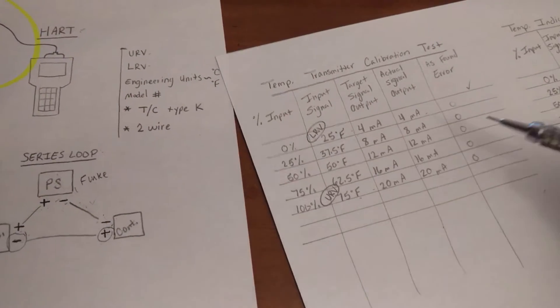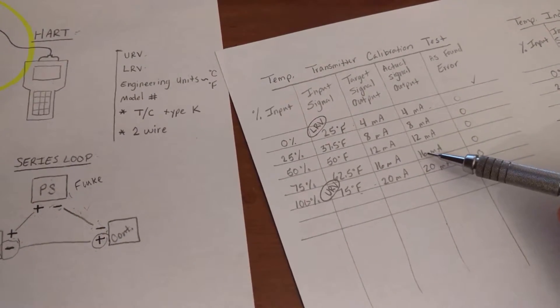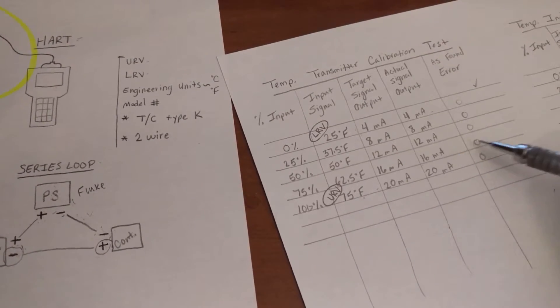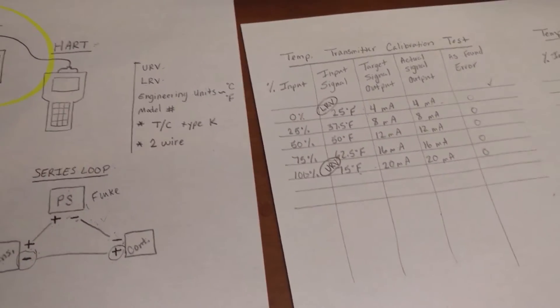And we would say okay, well at 75% we're hoping that we get 16 milliamps, and whenever we check our Fluke we're going to see it is 16 milliamps because the Fluke is going to tell us, and because there's no difference then it's working perfectly and there's no error.